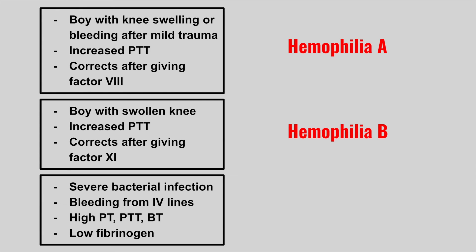Next, we have a patient with a severe bacterial infection who is bleeding from the IV lines. On labs we see a high PT, PTT, and bleeding time with a low fibrinogen. This is DIC.